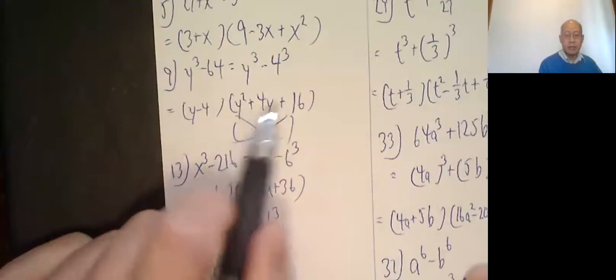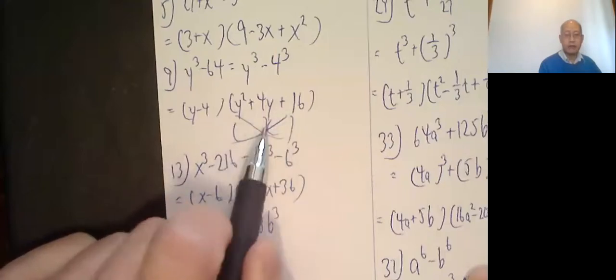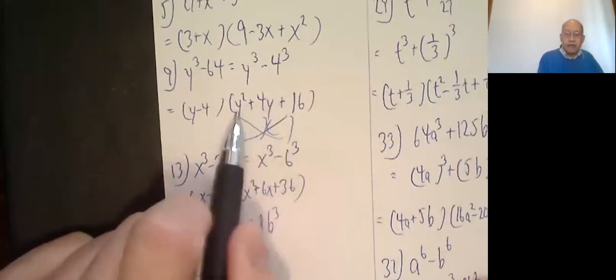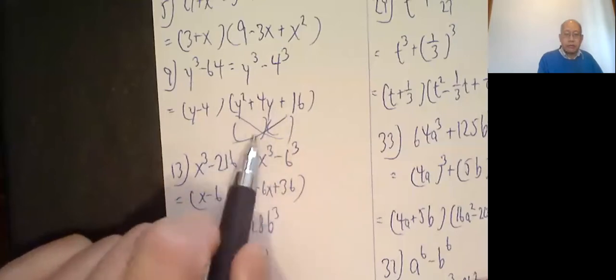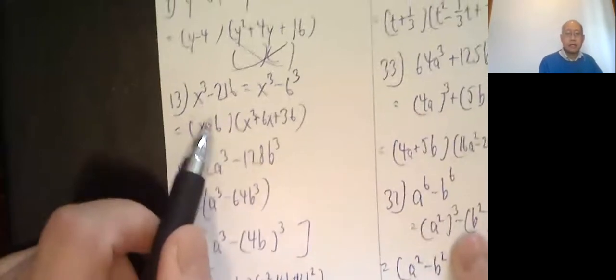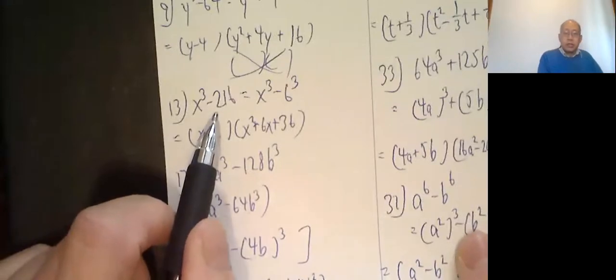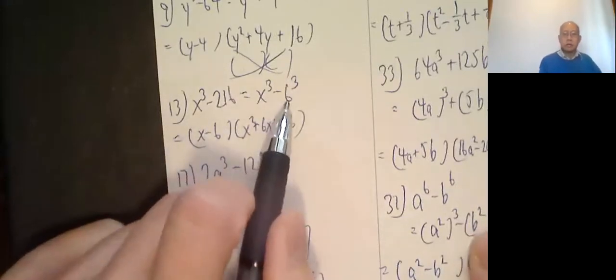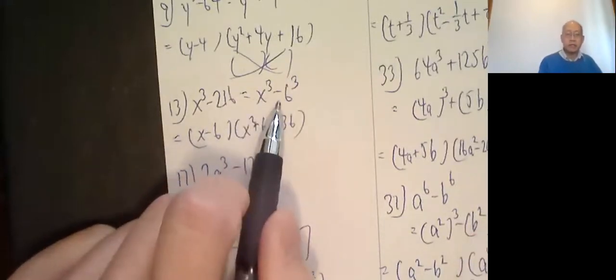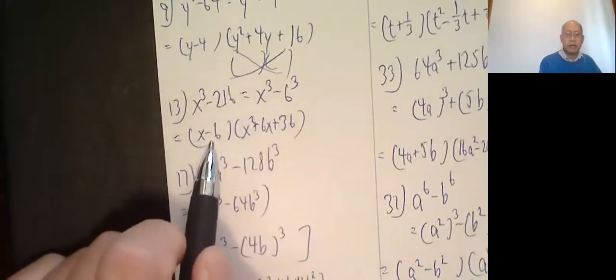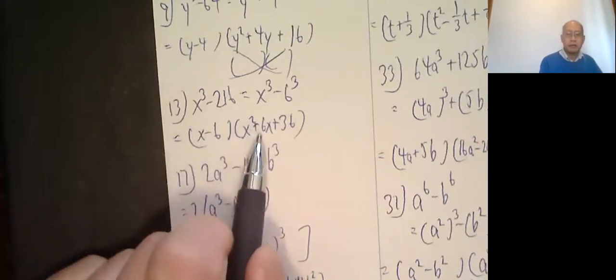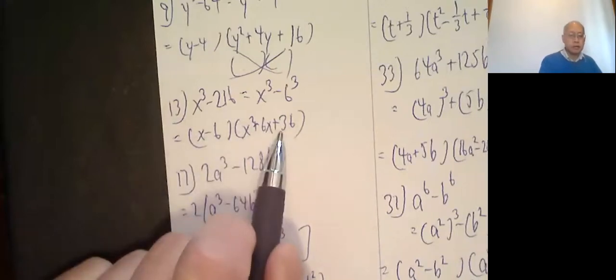This is just to indicate, you might be looking at this and say, can I factor this any further? The answer is no. You'll never be able to factor this any farther. So don't even bother trying. x cubed minus 216. 216 happens to be 6 cubed. So it's x cubed minus 6 cubed. Solved by formula, x minus 6, x squared plus 6x plus 36.